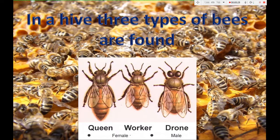In a hive, three types of bees are found. Queen — largest in size, it is a female bee and reproductive in nature. Drone — medium size, it is a male bee. Worker is a female bee, but infertile.